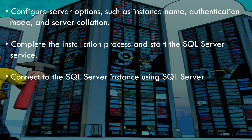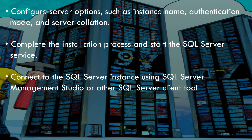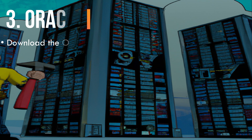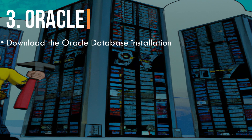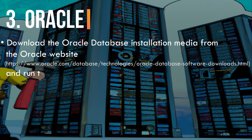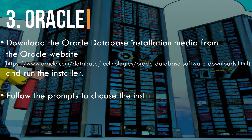Complete the SQL Server installation process, start the SQL Server service, and connect using SQL Server Management Studio or other SQL Server client tools to configure any additional settings as needed. Three: Oracle Database. Download the Oracle Database installation media from the Oracle website at www.oracle.com/database/technology/oracle-database-software-downloads.html and run the installer.